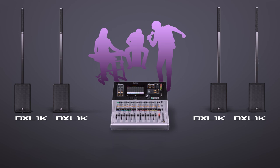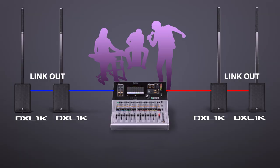Connecting a DXL-1K to your mixer's left and right outputs and then daisy chaining units down each line can allow you to create some massive stereo systems with each DXL-1K providing a mono link out to feed to the next unit.